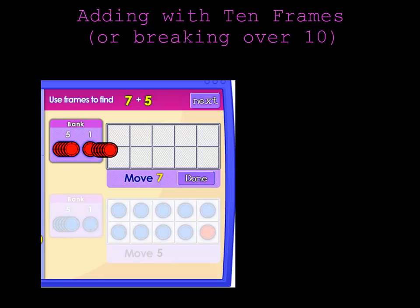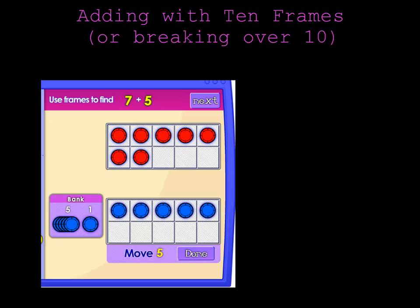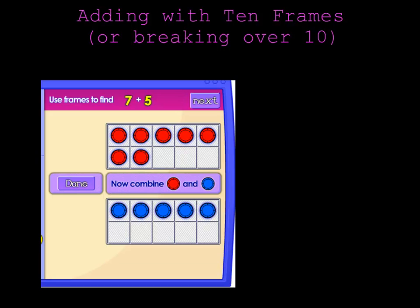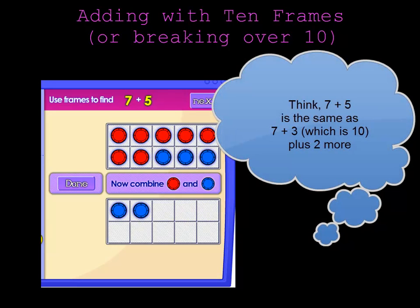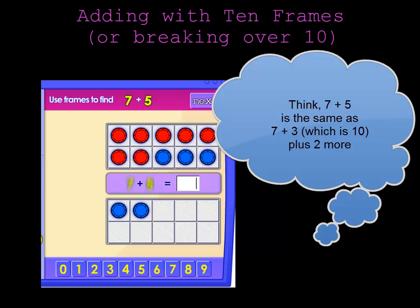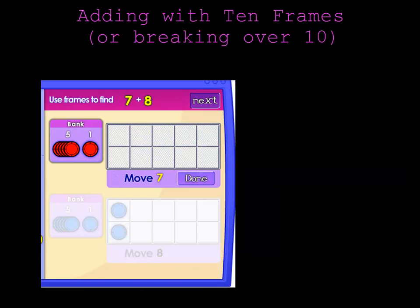Okay, let's do 7 chips in the top 10 frame plus 5 chips in the bottom 10 frame. Okay, I think you know what to do now. I need to move 3 chips up to the top 10 frame to complete that 10 frame. That makes an easier problem. So 7 plus 5 is the same as 10 plus 2 which is 12.